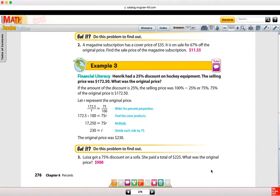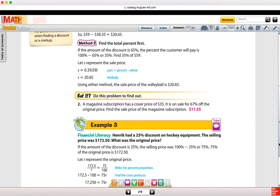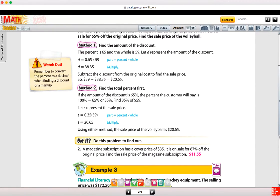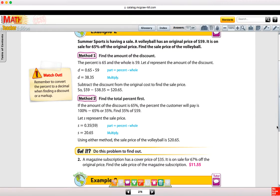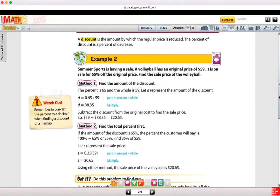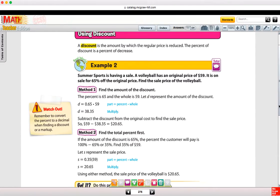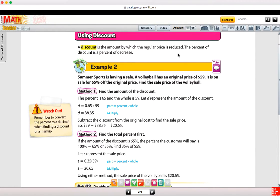On page 276, example two talks about a discount. And again, you have two different methods of finding that. A discount is when you take something off of the original price. You see discounts all over the place when things are on sale. Summer Sports is having a sale. The price of something is $59, and it's on sale for 65% off. So one way to do this is to take 65% as a decimal, 0.65.